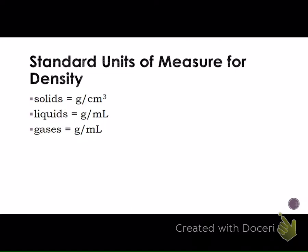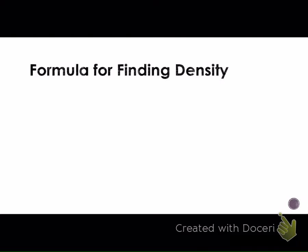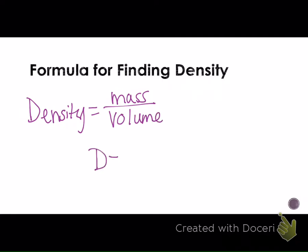The standard units of measure for density in solids, it's grams per centimeter cubed. In liquids and gases, it is grams per milliliter. Here is the formula for density. We have density equals mass divided by volume. Oftentimes, it's just written as D equals M over V.